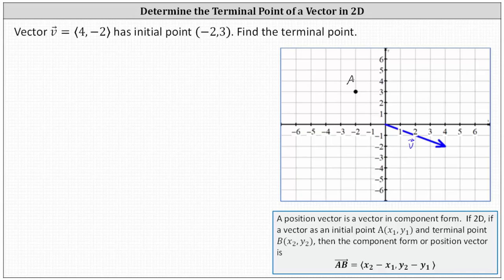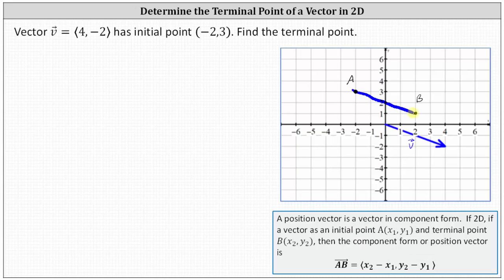Because we know the x component is four and the y component is negative two, we can determine the terminal point of the vector with initial point at negative two comma three by moving right four units and down two units. Let's go ahead and label the terminal point point B. And now if we sketch this vector, we can see it's equivalent to the given vector v in component form.